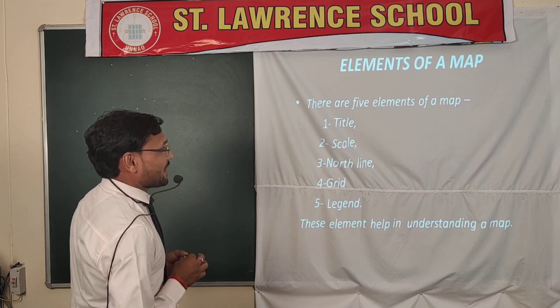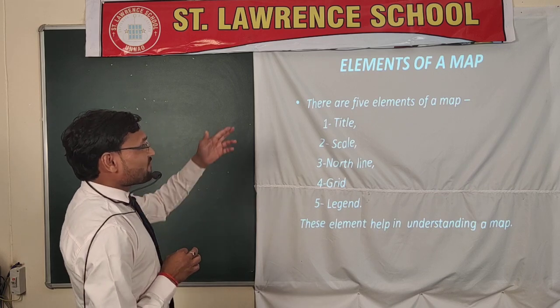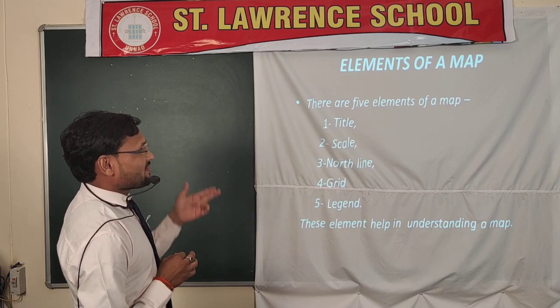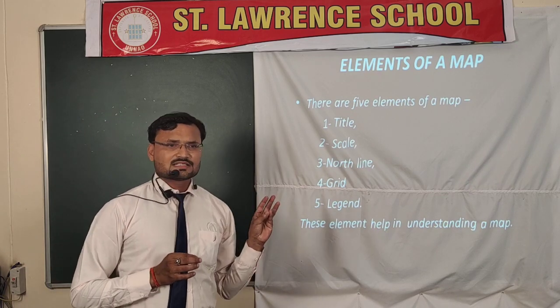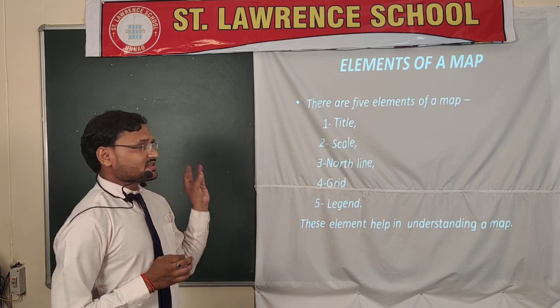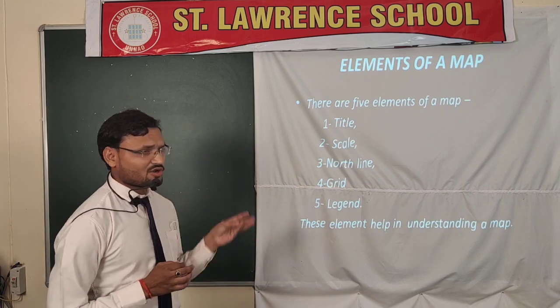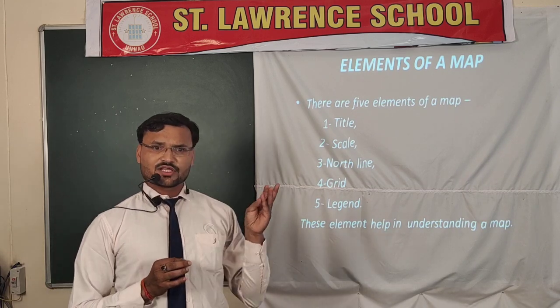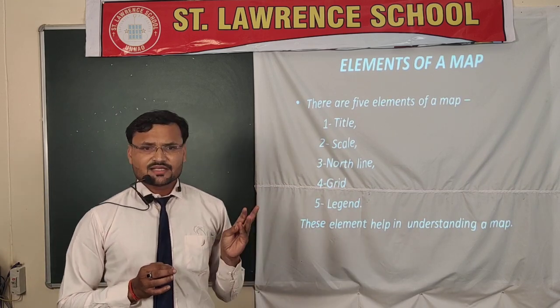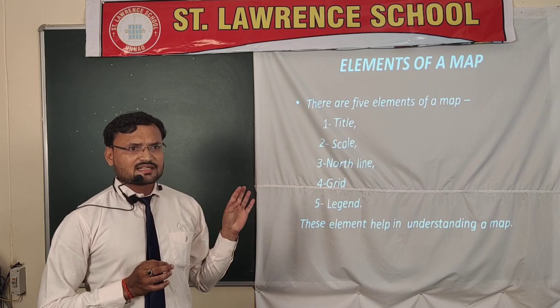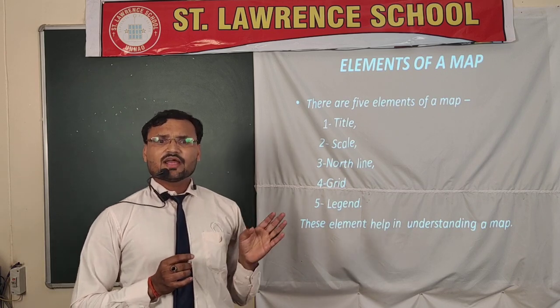Next is the elements of a map. There are five elements of a map. First is the title. Second is scale. Third is the north line. Fourth is the grid. And the fifth one is the legend, which is also called the index.